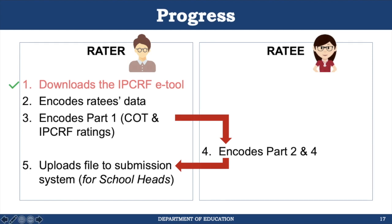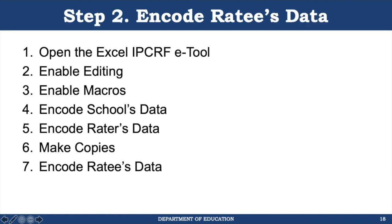For Mac users, double-clicking or opening the zip file should automatically extract the Excel tool. Now that we've downloaded the IPCRF electronic tool, let's proceed to the second step, which is to encode the ratee's data. Here are the activities for step two: opening the Excel IPCRF electronic tool, enabling editing, enabling macros, encoding the school's data, encoding the rater's data, making copies, and encoding the ratee's data.